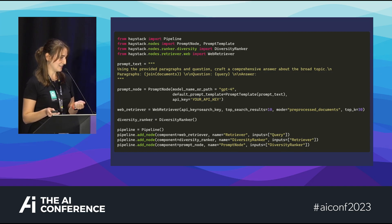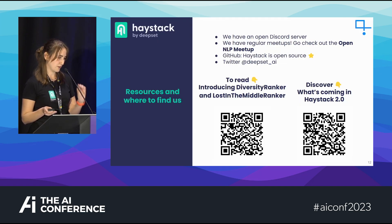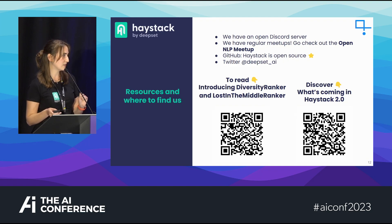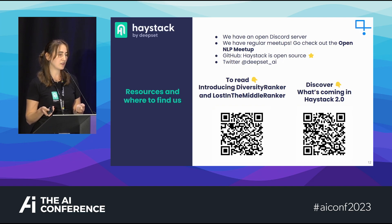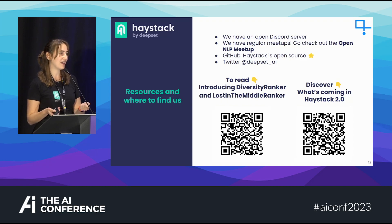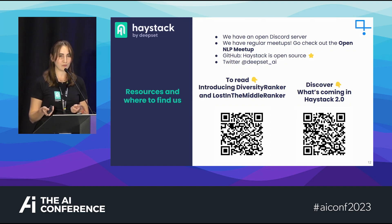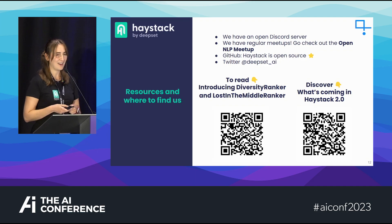These two QR codes: the first goes to an article my colleague wrote about these two specific rankers — the newest rankers we have in Haystack. The second QR code takes you to our GitHub page. Haystack is going through a major update to become Haystack 2.0, a breaking change that allows developers to build much more flexible pipelines with more room to design retrieval augmentation workflows involving large language models. And that's it — I finished one minute early!